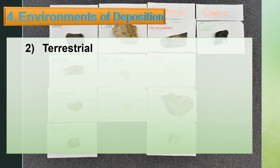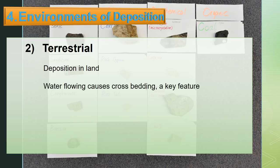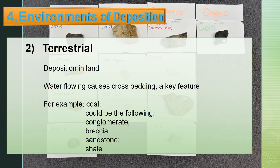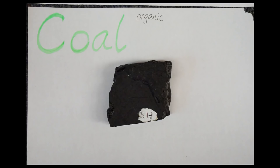Second, terrestrial — deposition on land. A key feature is that water flowing causes cross bedding. For example, coal, and conglomerate, breccia, sandstone, and shale could also be terrestrial. Here is a sample of coal.